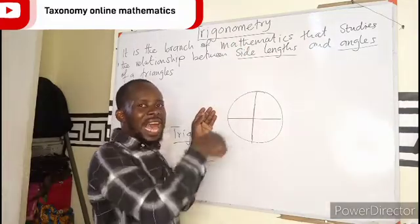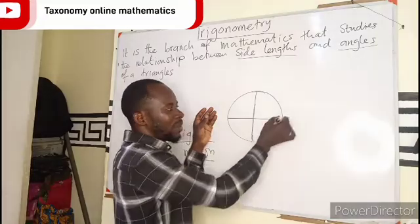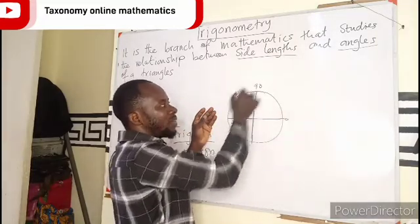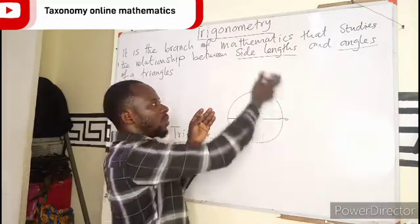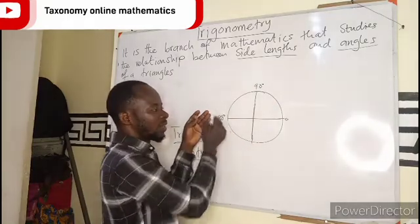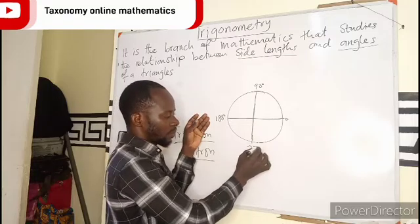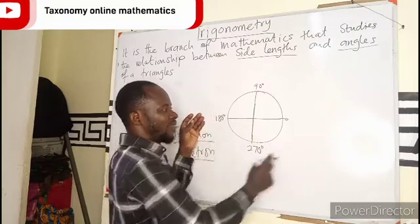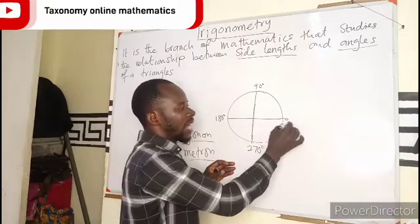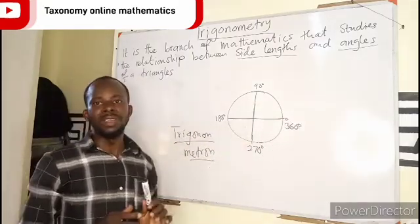Trigonometry is measured in the anti-clockwise direction. So if I am starting from here at 0, when I move to this I have 90 degrees. When I move further I have 180 degrees. When I move further I have 270 degrees. And when I come back to my original point, then I have 360 degrees. So we have 1, 2, 3, 4 quadrants.